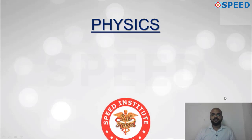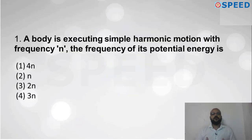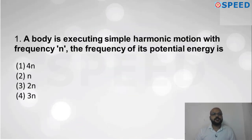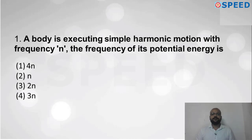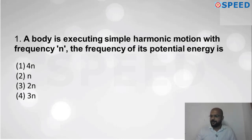Let's see question number one. A body is executing simple harmonic motion with frequency N. The frequency of the potential energy is what? Four options are given and we have to check which option is correct.